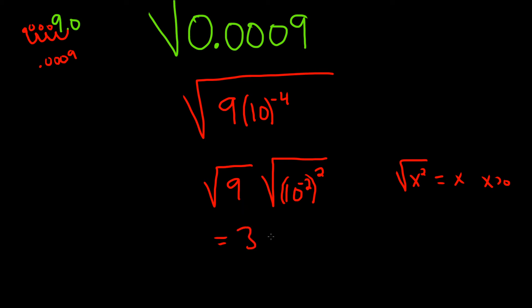So the square root of 9 is 3, and this will be times 10 to the negative 2. And this is the same thing as 3 times 1 over 10 squared, which is 3 times 1 over 100, which is 3 over 100, which is a perfectly acceptable answer.